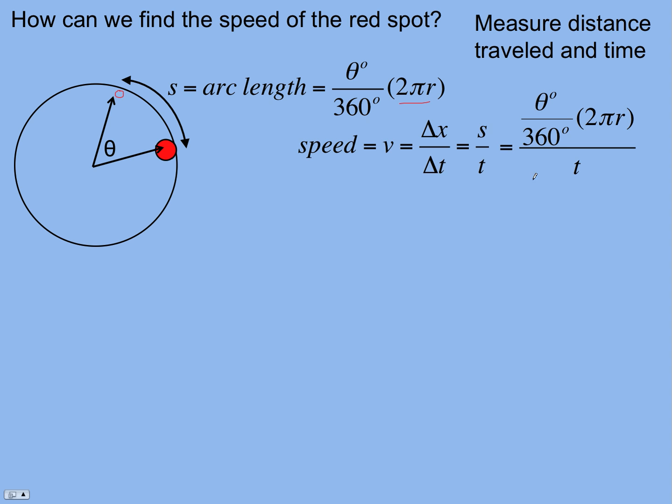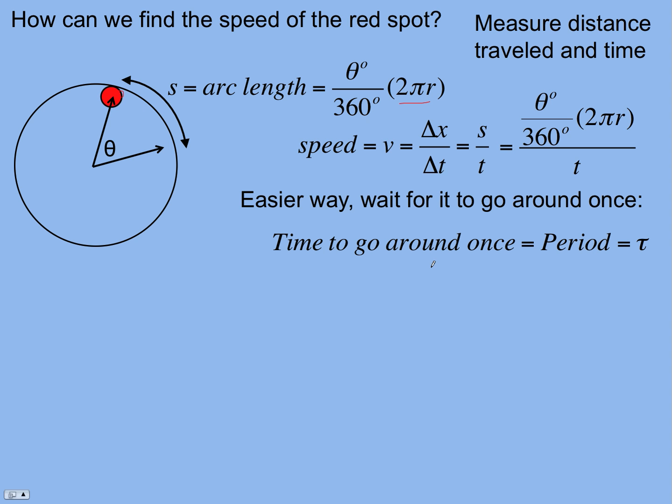Not too bad. A better thing to do, if we had the opportunity anyway, would be to watch the spot go around once. If we waited for it to go all the way around, this would look a little easier because the angle would be 360 degrees. Let's first define the time to go around once as the period. That's an important idea. You need to know that. The time to complete a cycle, to go around once, is the period.